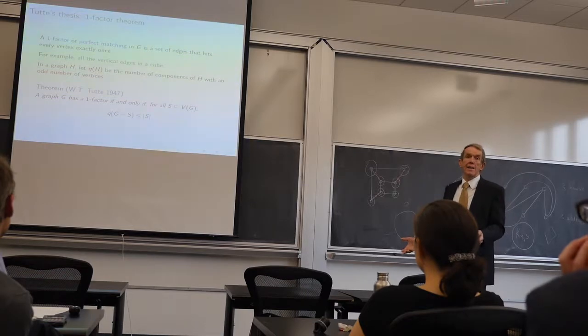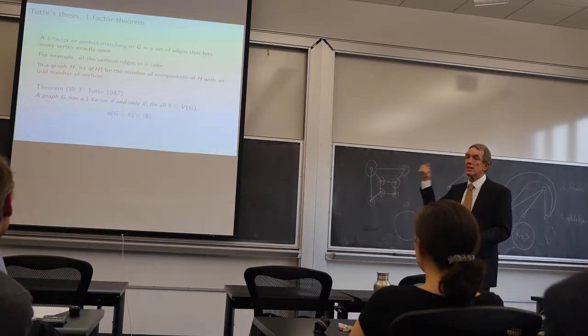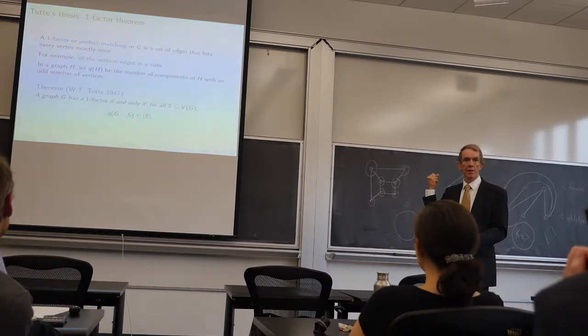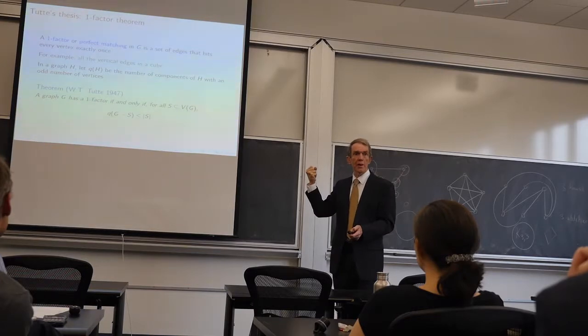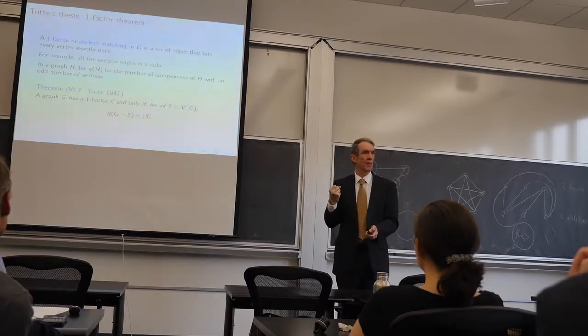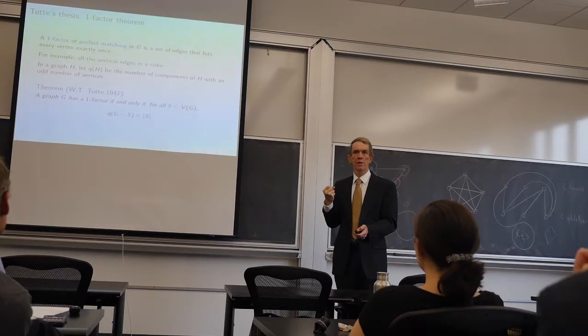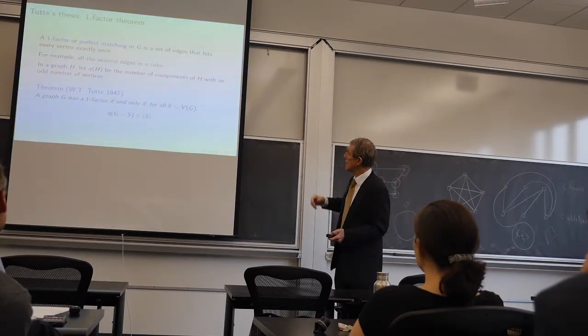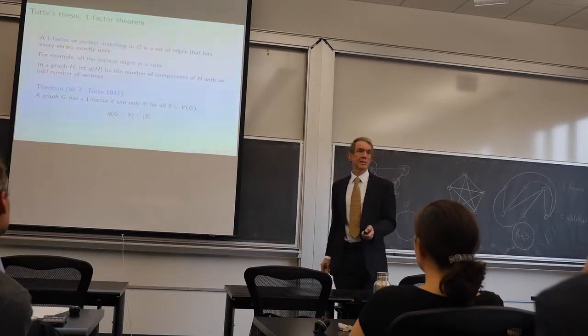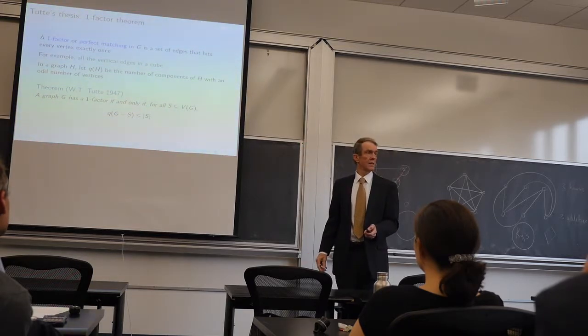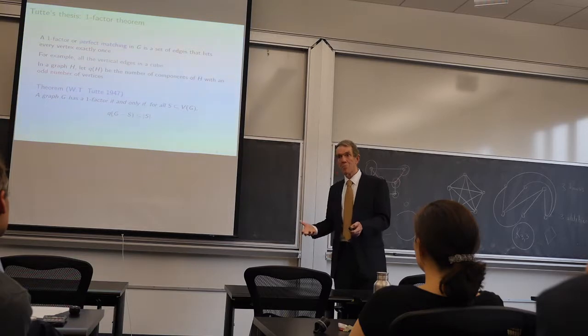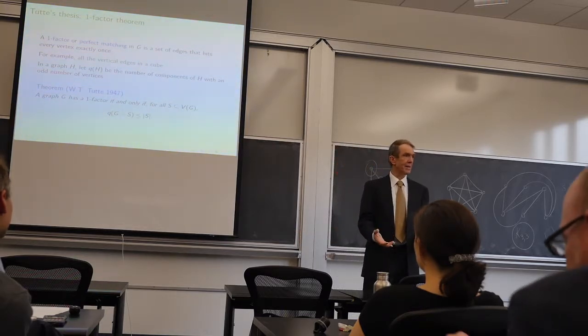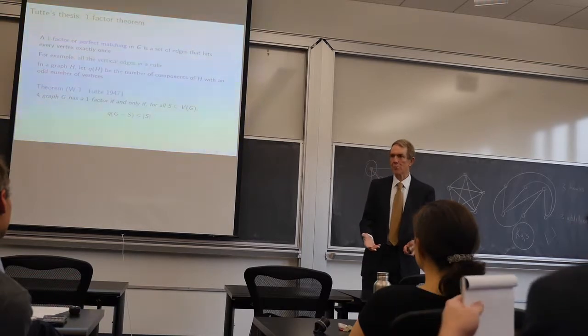Suppose I had a second component with an odd number of vertices. I'm going to run into trouble. So that was Tutte's theorem. A graph has a one factor exactly when, every time you remove a set of vertices, the number of components with an odd number of vertices is less than or equal to the number of vertices that you remove. And it's a characterization. This was in his PhD thesis.